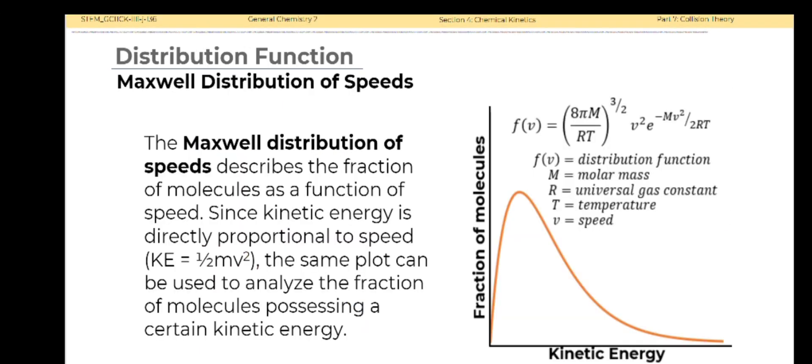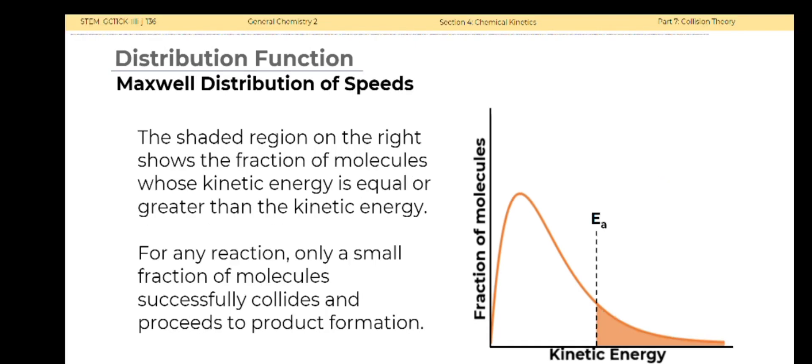The Maxwell distribution of speeds describes the fraction of molecules as a function of speed. Since kinetic energy is directly proportional to speed, KE equals 0.5mv squared. The same plot can be used to analyze the fraction of molecules possessing a certain kinetic energy. The shaded region on the right shows the fraction of molecules whose kinetic energy is equal or greater than the activation energy.